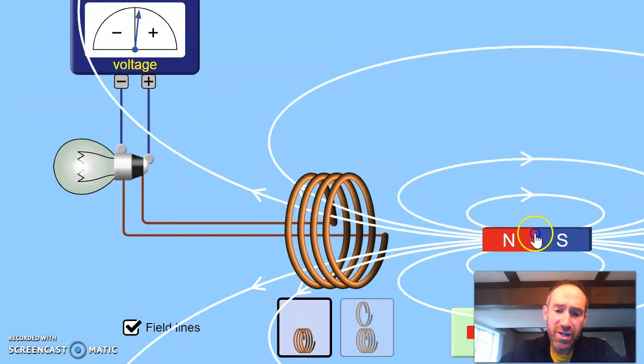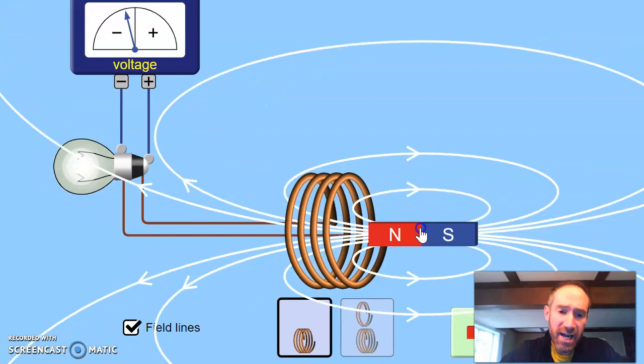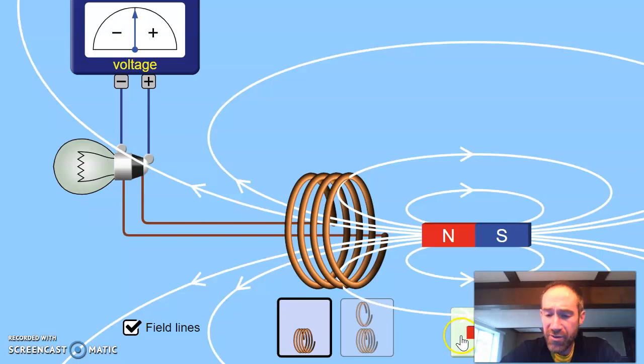And so as you can see, as I change the amount of field lines, the flux is changing, and look at the light bulb lighting up back and forth. It's a little bit hidden under my picture here, but there's a feature that lets you spin the magnet.